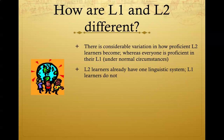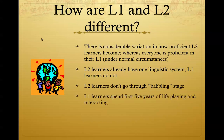Also, second language learners understand that sentences consist of nouns, verbs, adjectives, etc. Even though the adjectives may be in a different place in the sentence, they still understand that there are certain rules and expectations when communicating. Second language learners don't have the luxury of going through a babbling stage and just playing with the language.